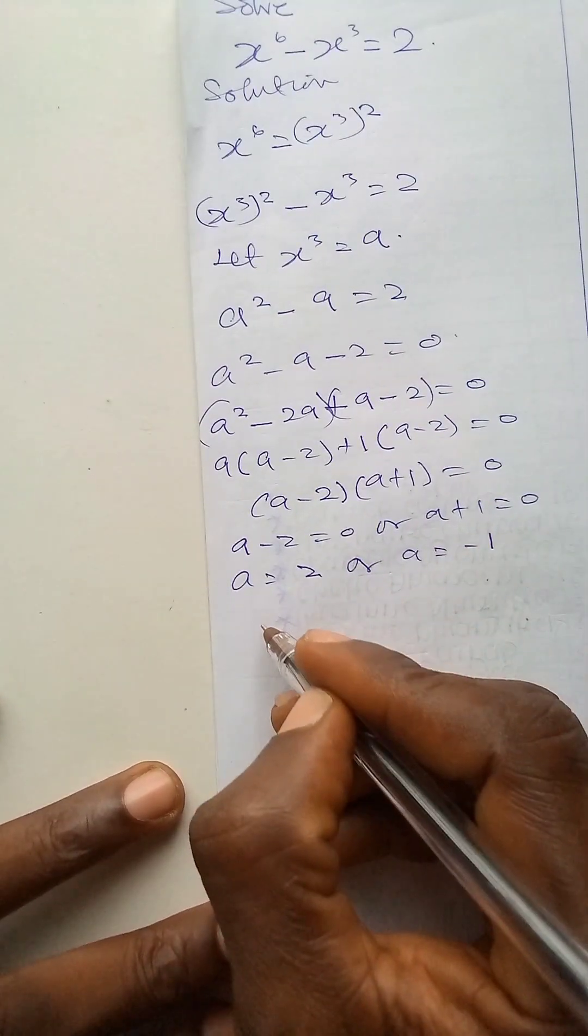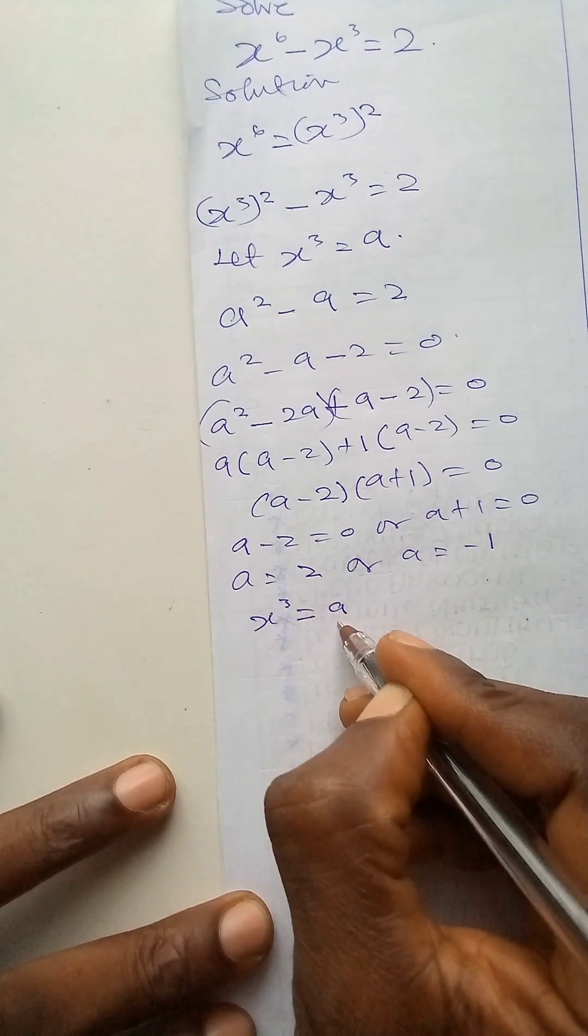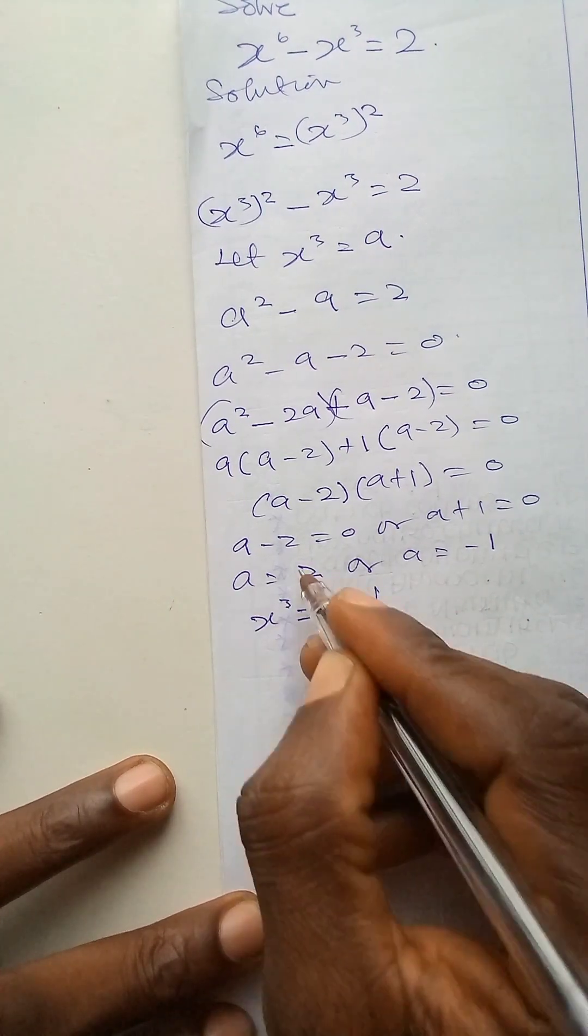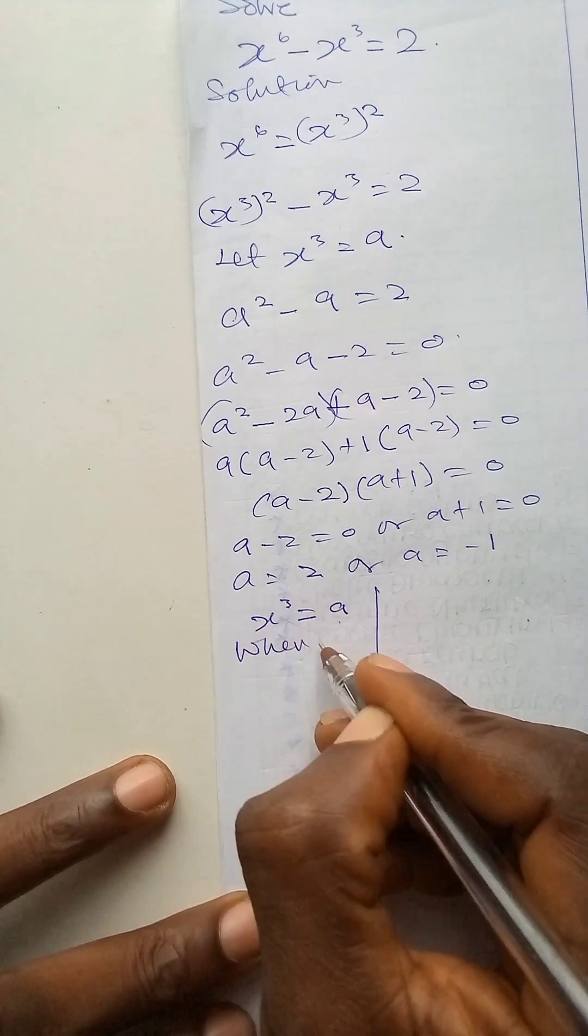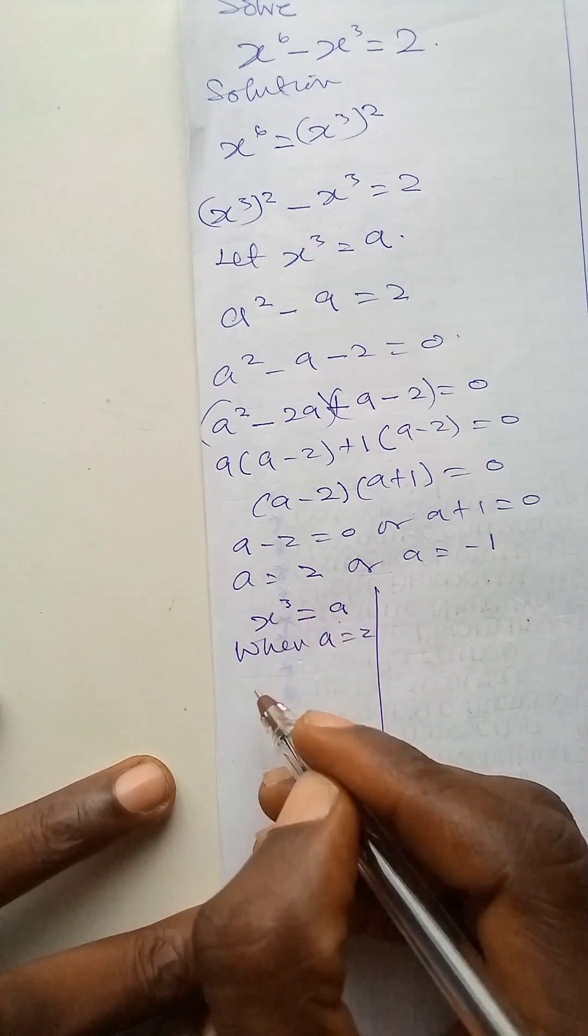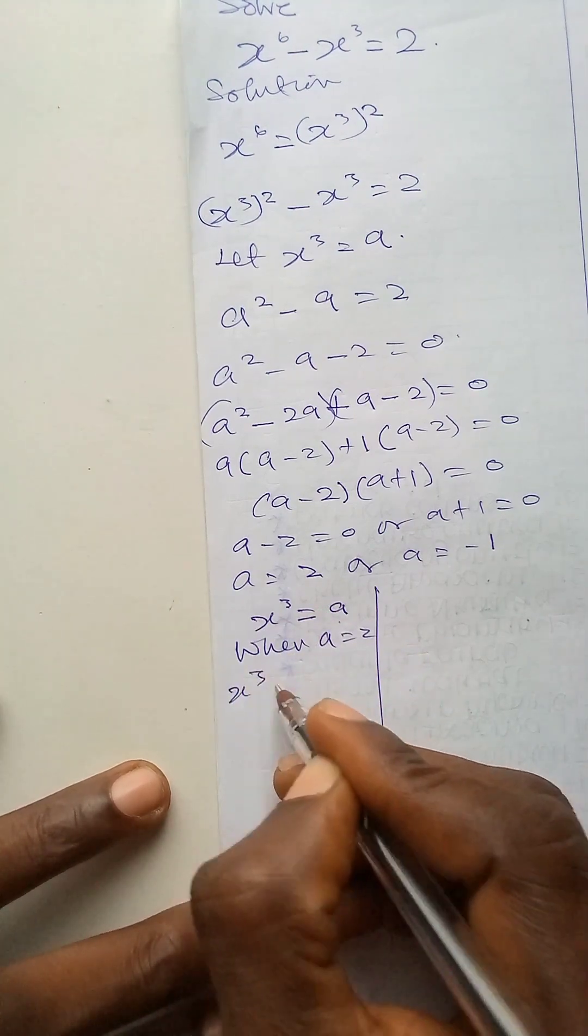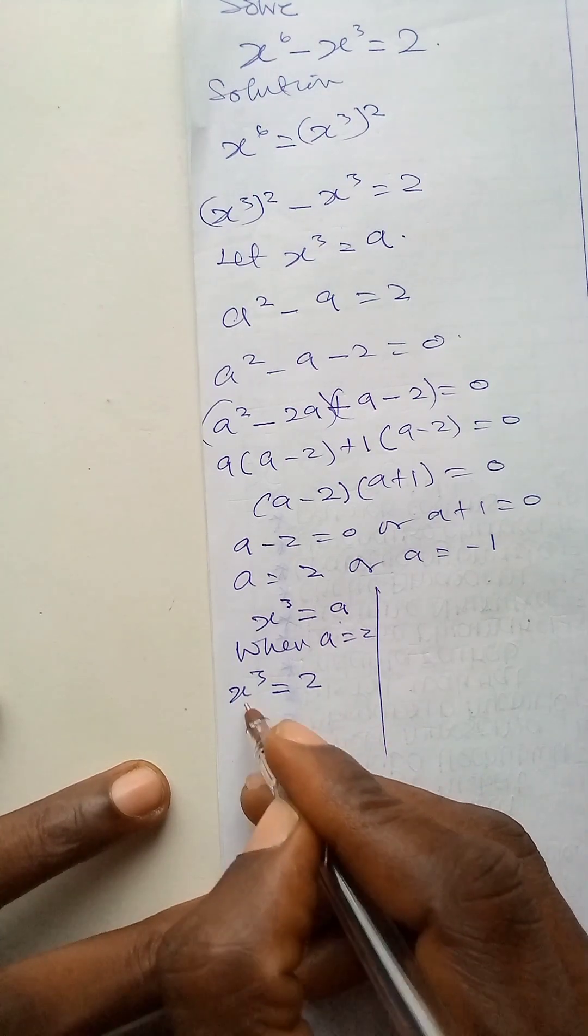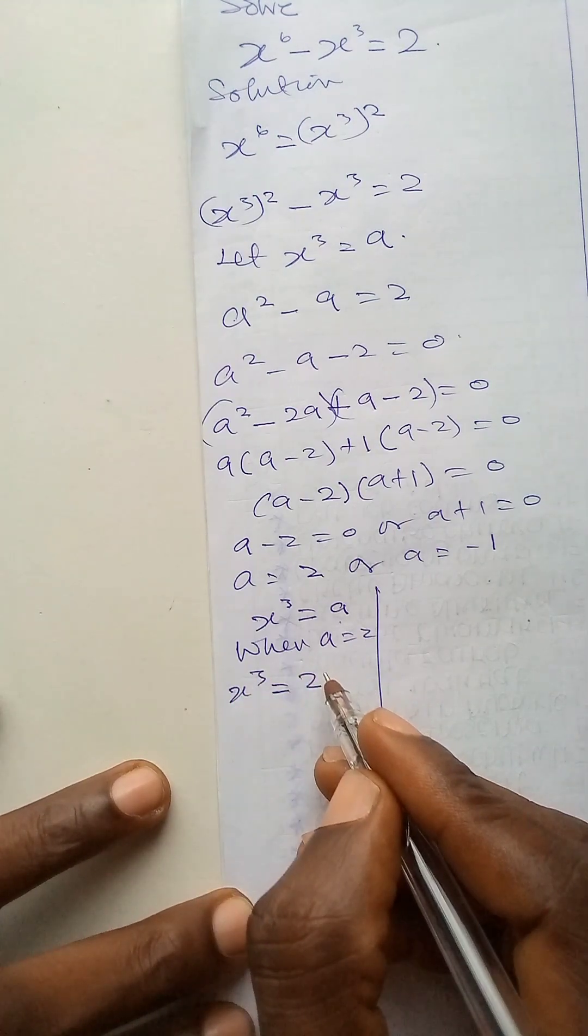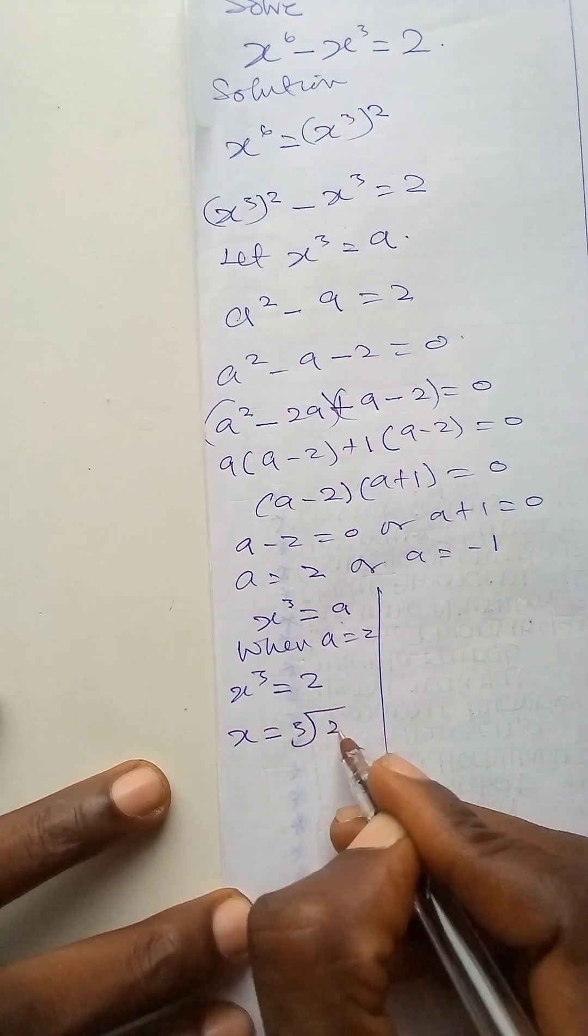Since that is the case, x raised to power 3 is a. And our a in this first case is 2. So when a is 2, what is our x? x becomes x to power 3 is equal to 2. So I will have to take the cube root of 2. So that is x is equal to the cube root of 2.